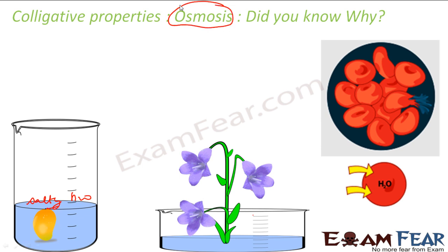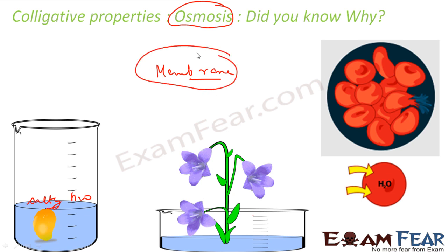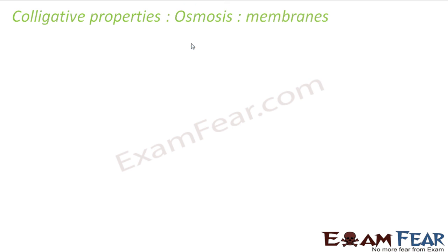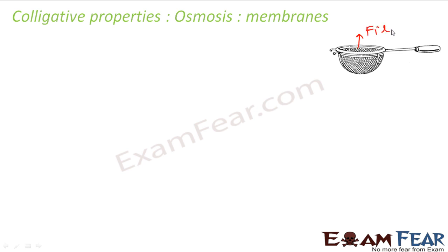We'll understand why this is happening. If you observe all three of these processes, you'll see there is something common in all of them — that is called a membrane. They are surrounded by a membrane. The mango has a membrane, the flower has a membrane, the red blood cells have a membrane. Think of membrane as a filter or sieve — think of this kind of filter.